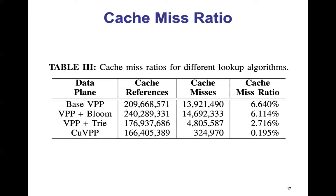Our measurements also show that the cache miss rate of QVPP is lower than VPP with the trie technique by an order of magnitude, and it is lower than base VPP and VPP with bloom filters approaches by six orders of magnitude.